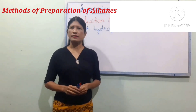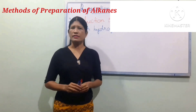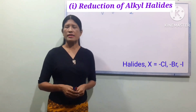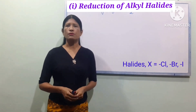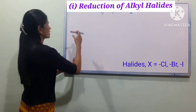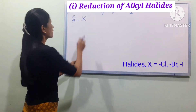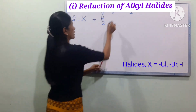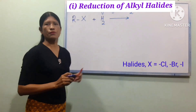Number one: heating sodium alkanoate with sodium lime. The equations we have here — RX is chloride, bromide, iodide. RX is an alkyl halide. RX plus H2, hydrogen halide. The condition is given.